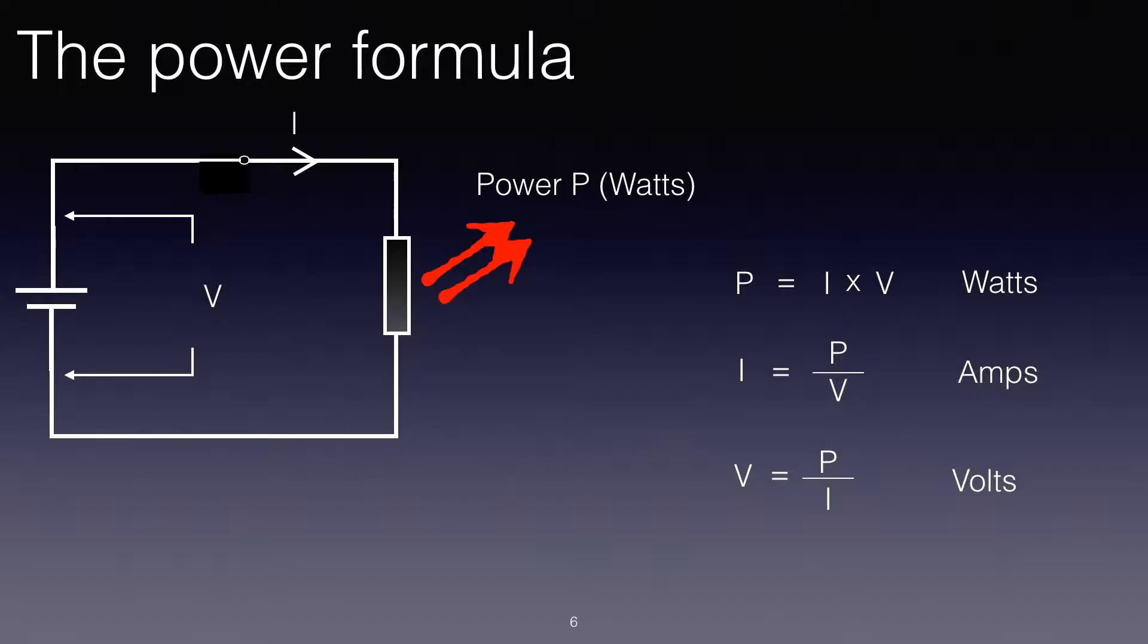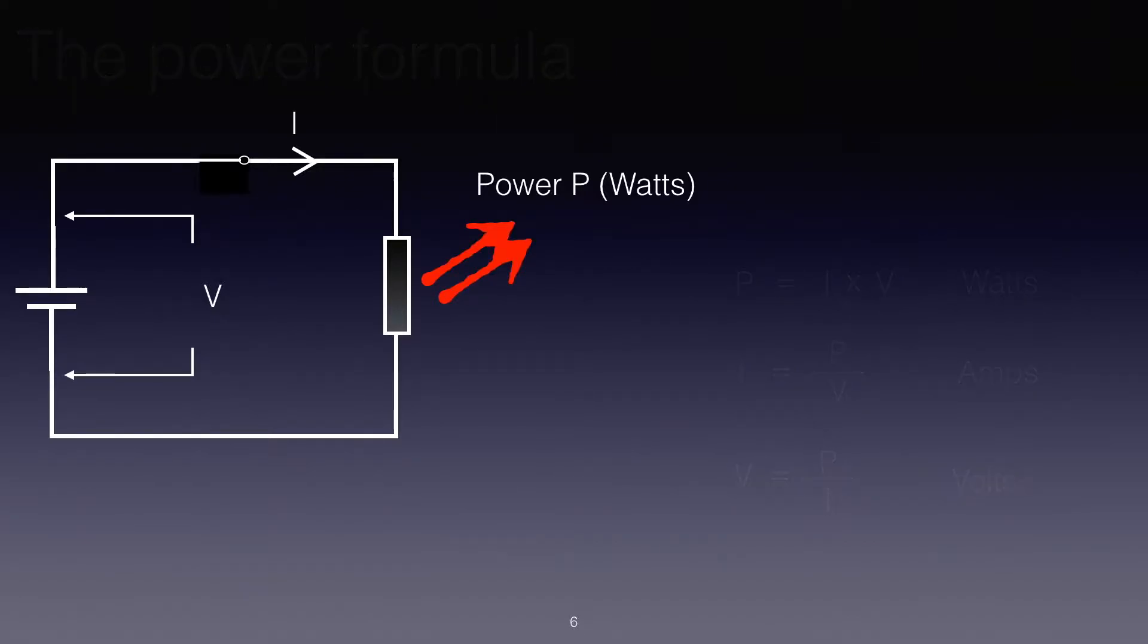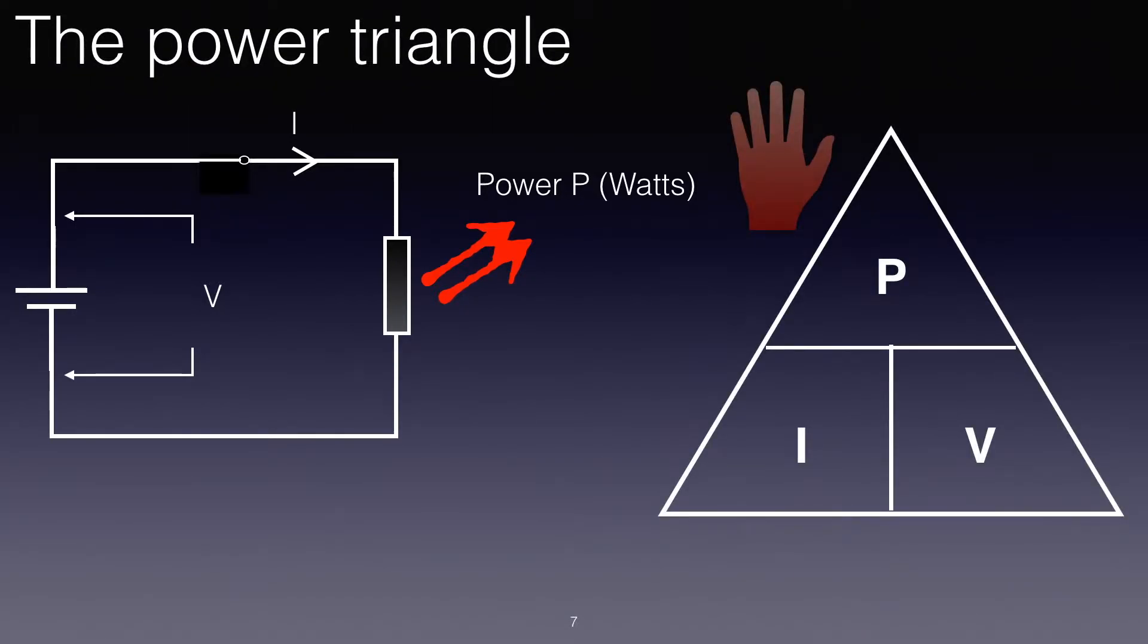Now once again, just like the VIR triangle, we can use a triangle to help us sort this out. And here it is, it's the PIV triangle. If we want to find out what the power is, we would cover P and we see at the bottom there of the triangle P equals I times V, that's the first form of the equation. If we cover I, that gives us I equals P over V, and similarly if we cover V, that gives us V equals P divided by I.